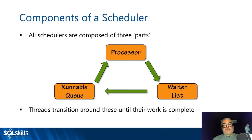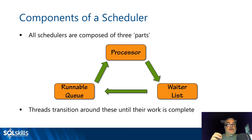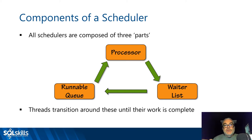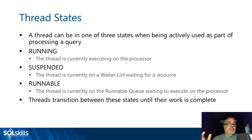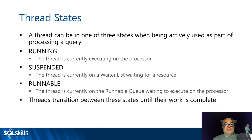The basic components of a scheduler: the processor, where only one thread runs at a time; the waiter list, which holds threads waiting for a resource; and the runnable queue, which holds threads whose resource is now available but that are waiting to get back on the processor. In reality it's one list with different statuses, but it helps to visualize them separately. Threads go around this loop — running, suspended, runnable — until they finish processing the query.